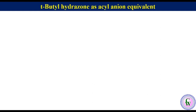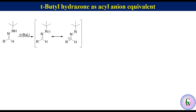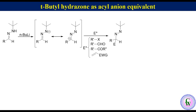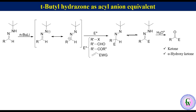T-butyl hydrazone as acyl anion equivalent. T-butyl hydrazone derived from an aldehyde acts as an acyl anion equivalent. It reacts with n-butyllithium to produce a resonance-stabilized anion, which can react with a variety of electrophiles like alkyl halide, aldehyde, ketone, and Michael acceptors to produce a 1,2-disubstituted azine, which tautomerizes to a new t-butyl hydrazone. This new t-butyl hydrazone after acidic hydrolysis gives a product that, depending upon the structure of the electrophile, can be a ketone, alpha-hydroxy ketone, 1,4-diketone, 4-oxoaldehyde, or 4-oxoester.